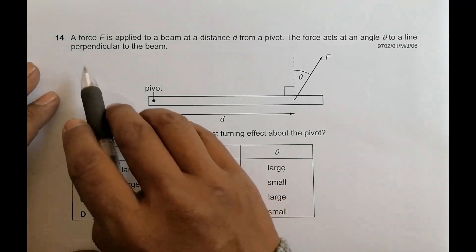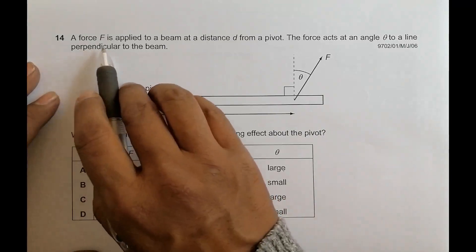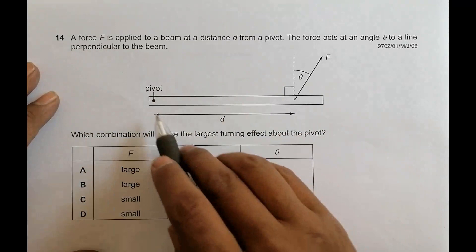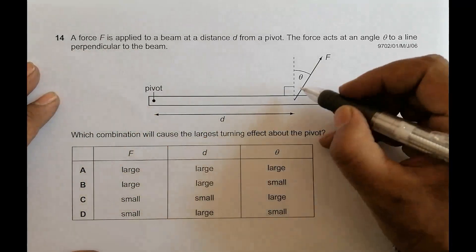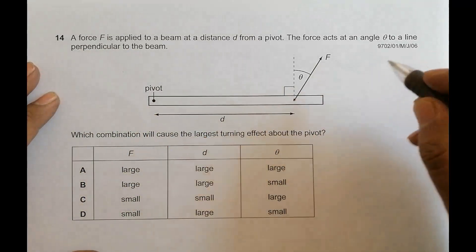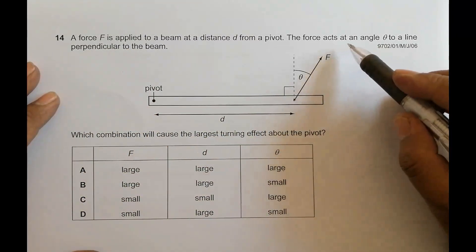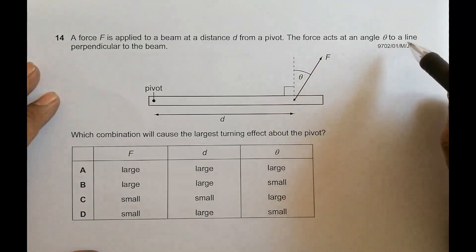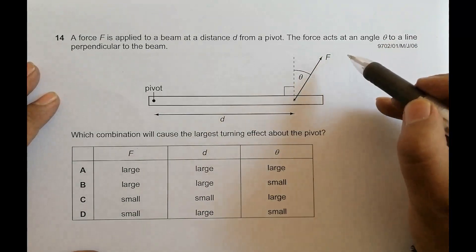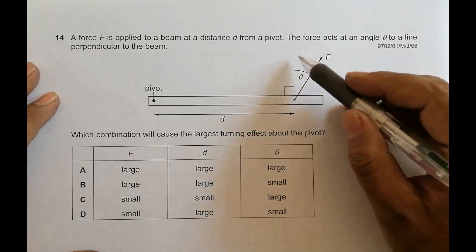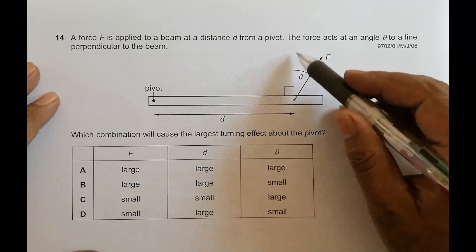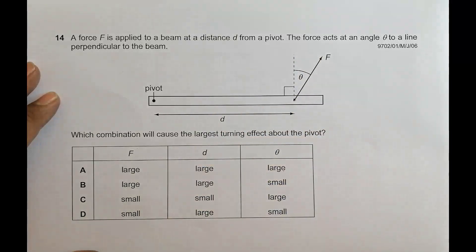A force F is applied to a beam at a distance D from the pivot. This is the pivot, this is D, and the force is applied here at this point. The force acts at an angle theta to the line perpendicular to the beam — so this angle theta is formed by the force with the line perpendicular to the beam.